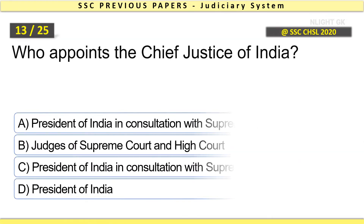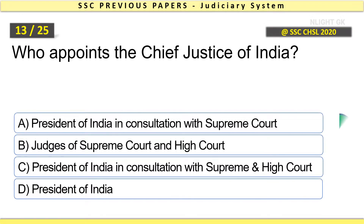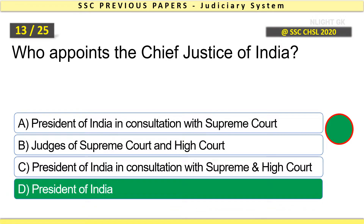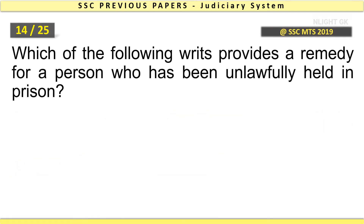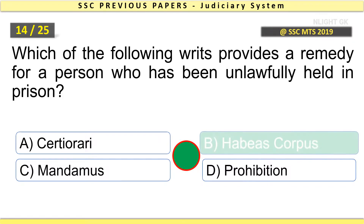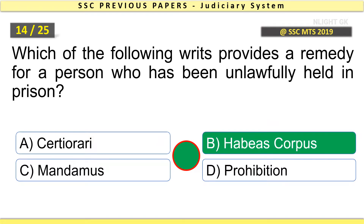Who appoints the Chief Justice of India? Answer: the President of India. Which of the following writs provides a remedy for a person who has been unlawfully held in prison? Answer: Habeas Corpus.